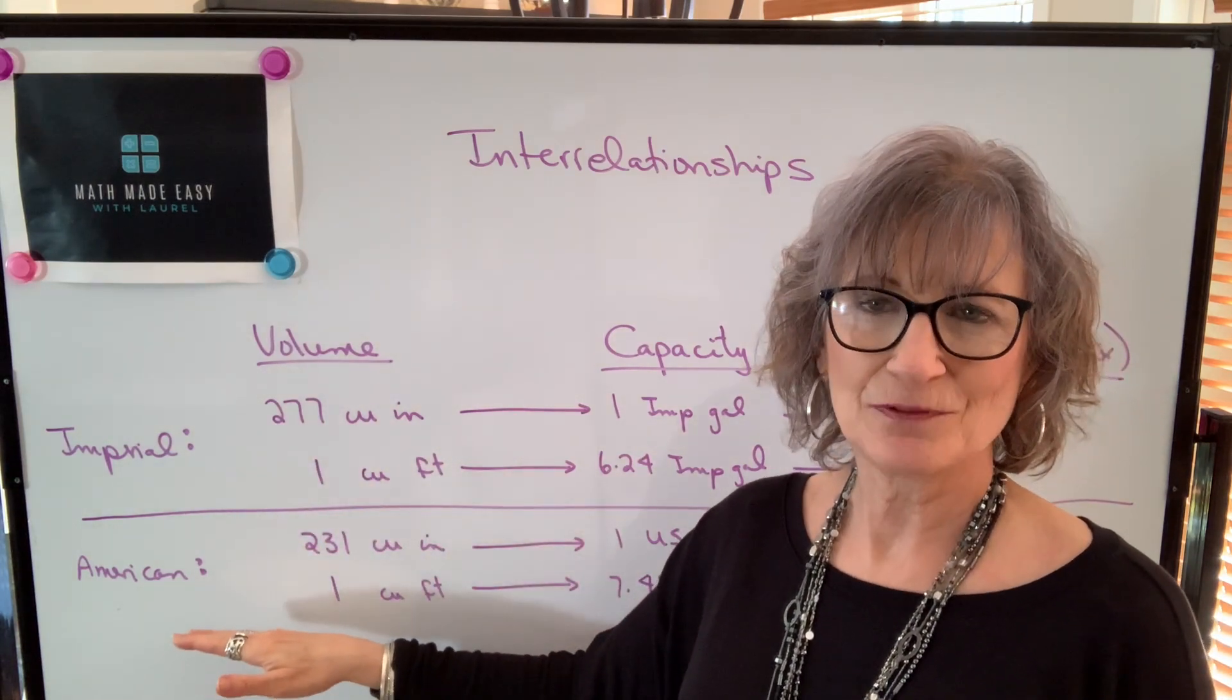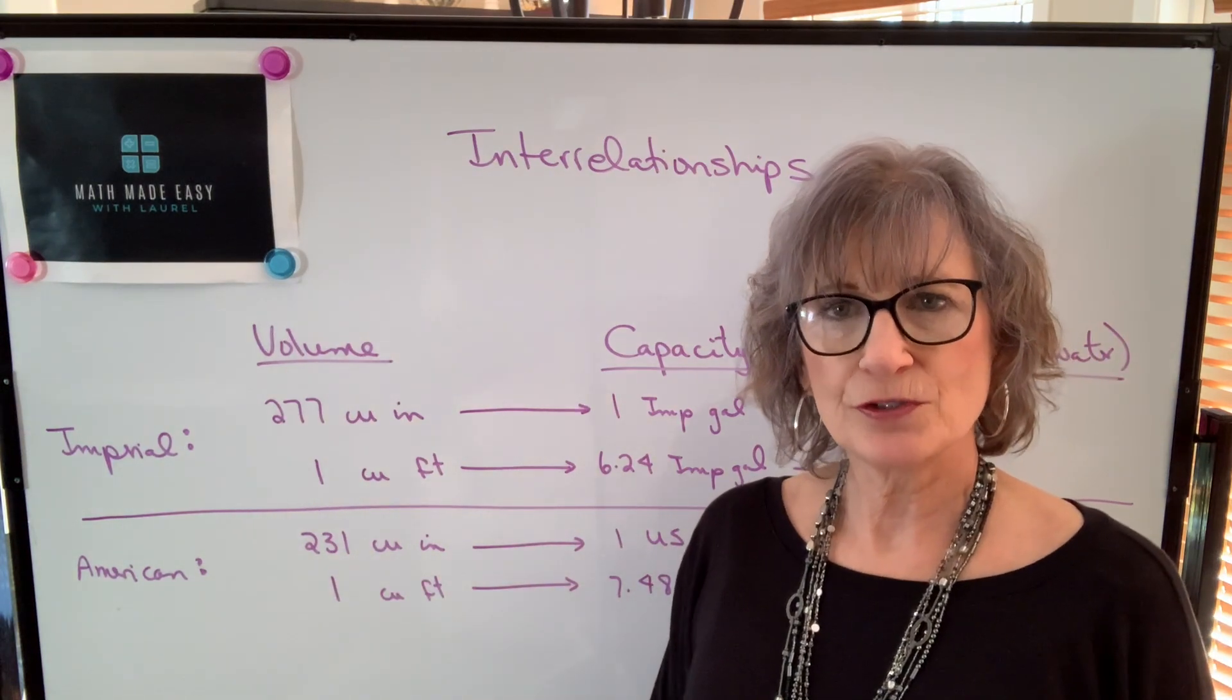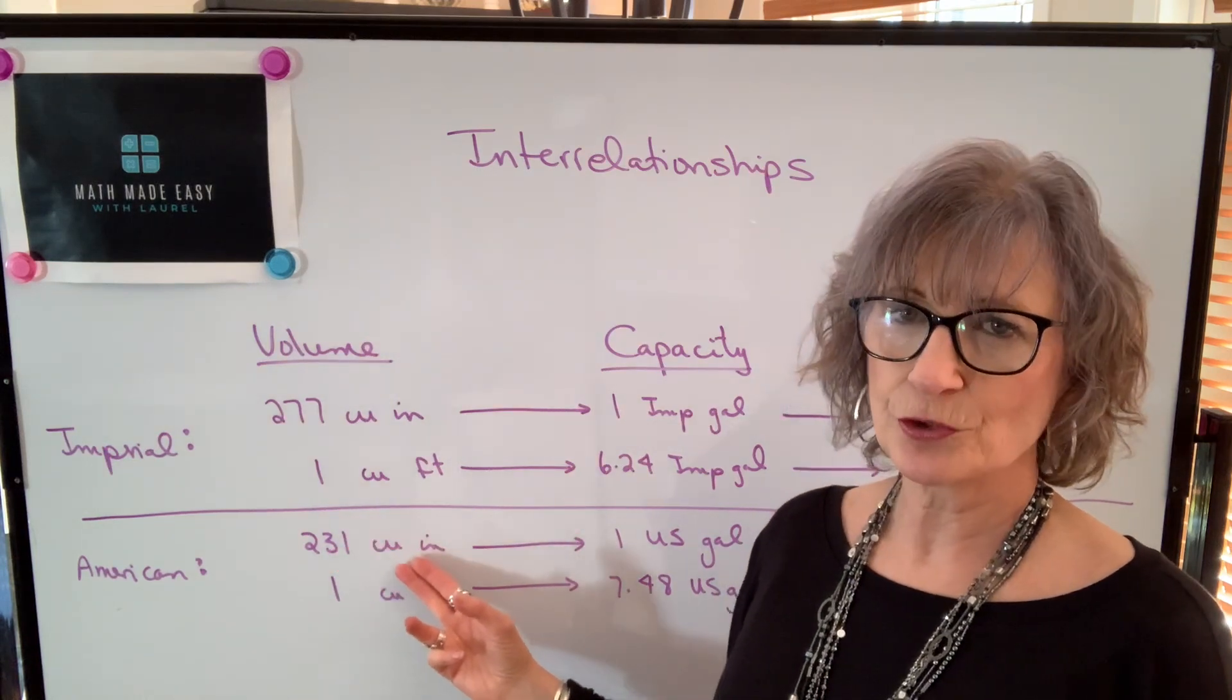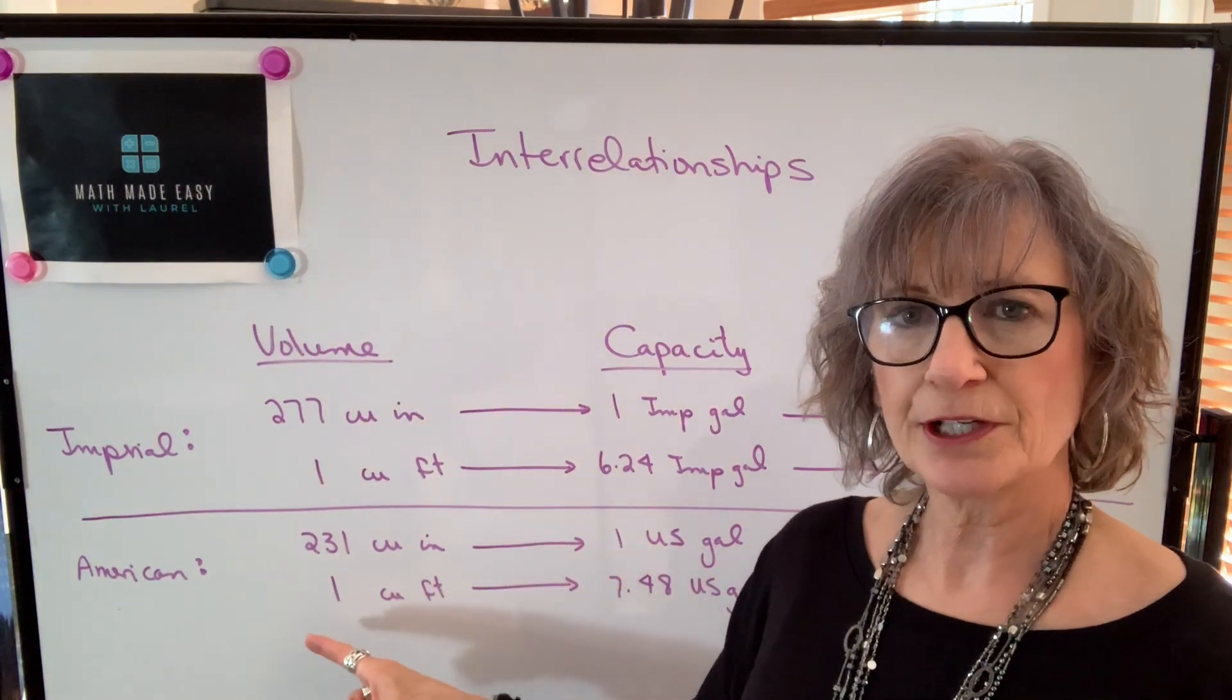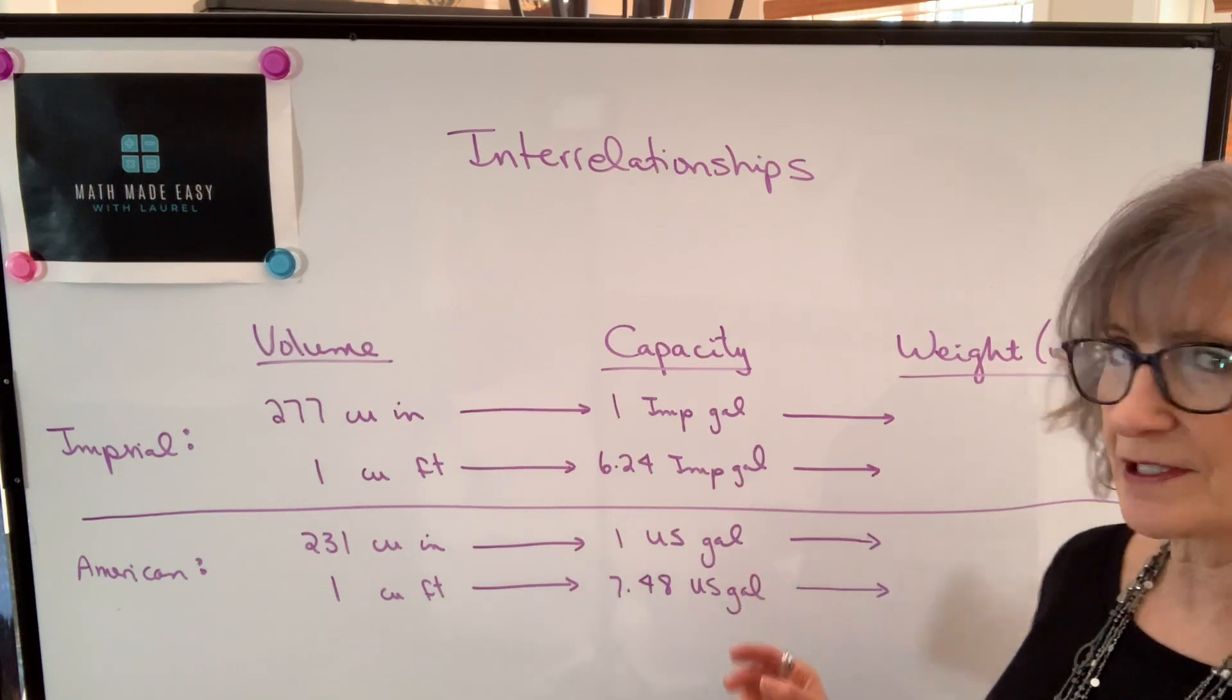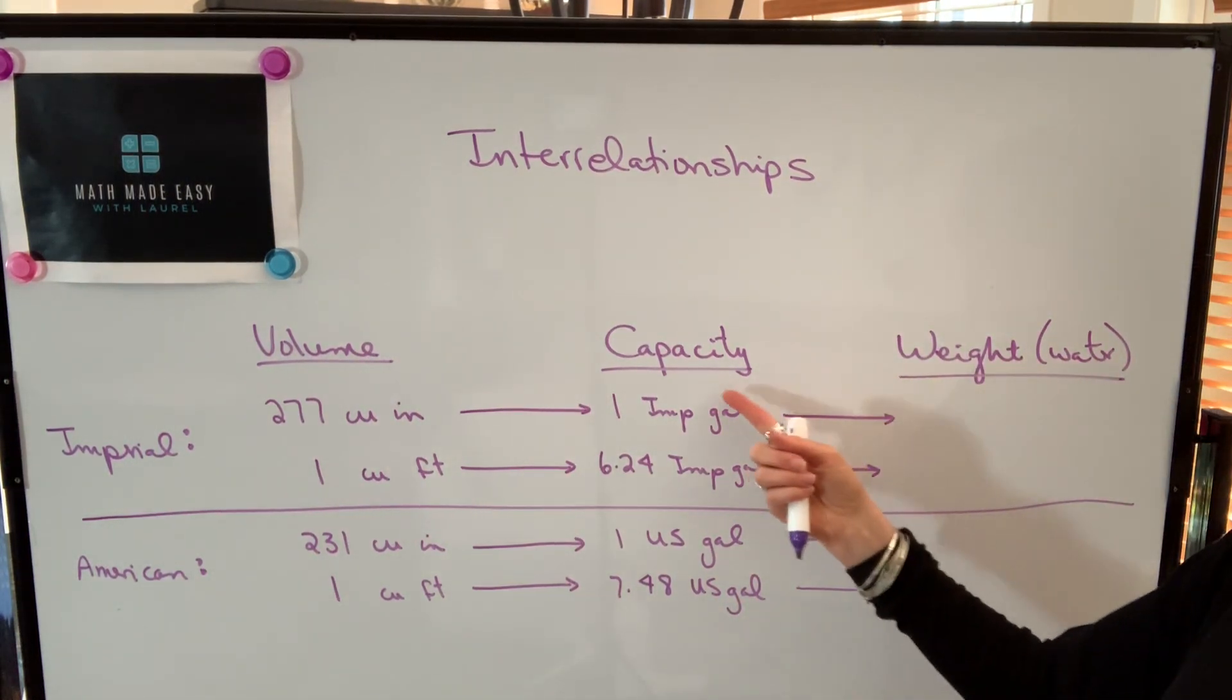we have an American system in place as well. American gallons are smaller. So if you're using American gallons, you have to understand that there's only approximately 231 cubic inches in a US gallon. And because they're smaller in a cubic foot, you'll have more, you'll have approximately 7.48 US gallons.